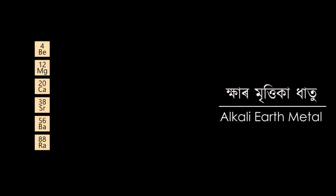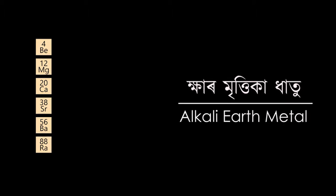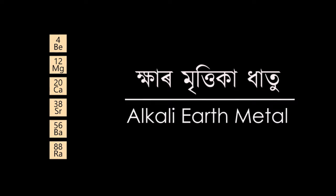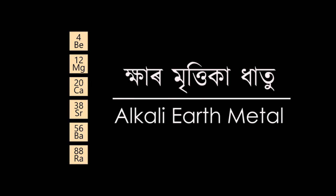The second group elements of the periodic table are called alkaline earth metals. The oxides of these metals are soluble in water and are found in nature.